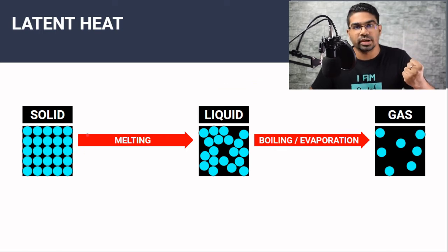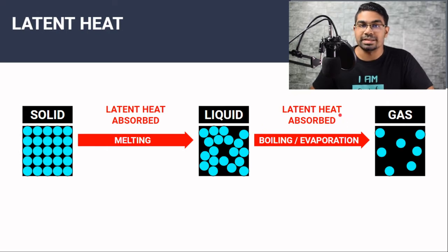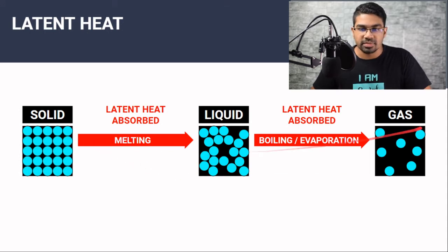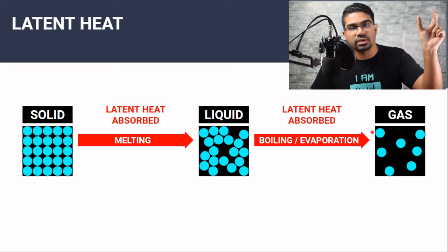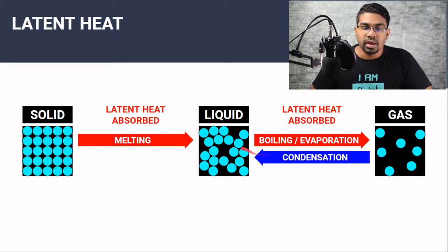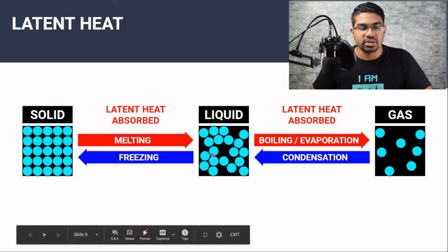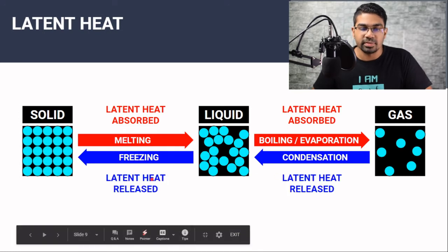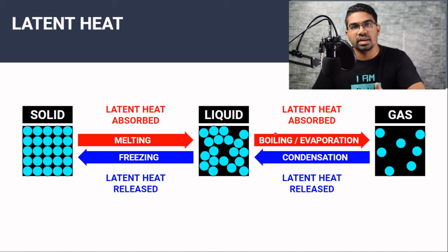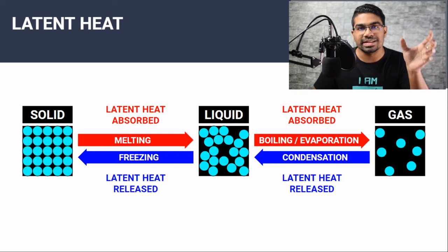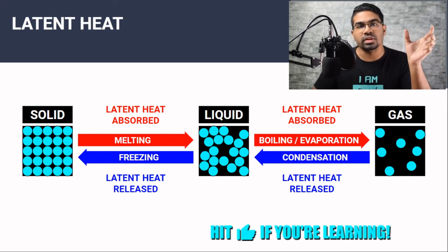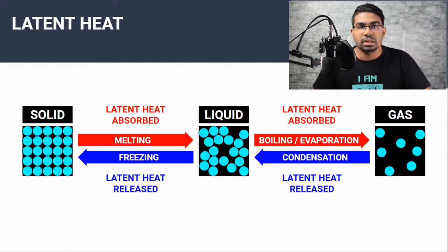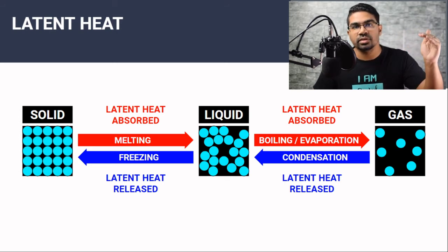Latent heat is absorbed in order to break the bonds — so in melting as well as in boiling and evaporation, latent heat is absorbed. Whenever particles need to move further apart during the change of phase, latent heat will be absorbed. We can go in reverse as well. When steam becomes water, the particles come closer together and it loses energy — this process is condensation. When water becomes ice again, this process is freezing. In these situations, energy is being released, so latent heat is released. Latent heat can both be absorbed as well as released.